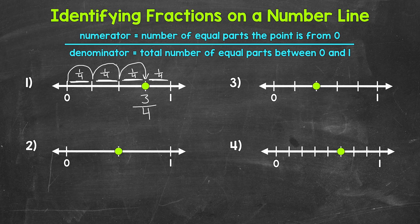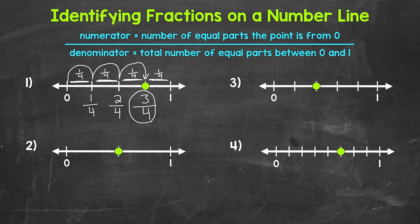Going from zero to the first tick mark, that's one fourth — one out of the four equal parts, or one fourth of the distance from zero to one. Then from zero to the second tick mark is two fourths — two equal parts out of four, or two fourths of the distance from zero to one. Then we have three fourths, which was our fraction for number one — three equal parts out of four. And lastly, we have four fourths — four out of the four equal parts — which is just one whole, that full distance to one.